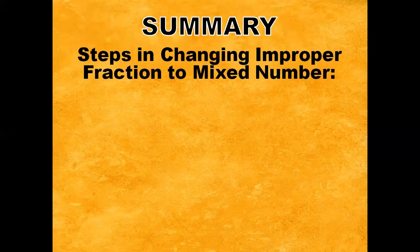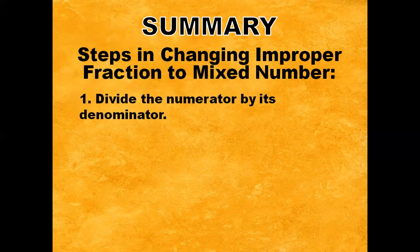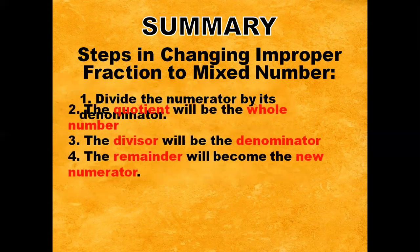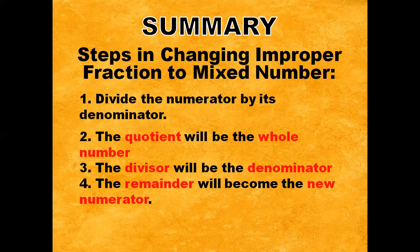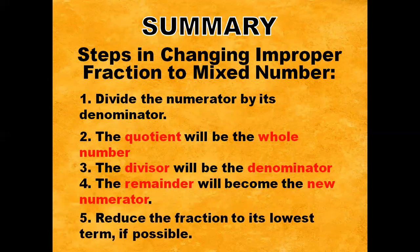Always remember the steps in changing improper fraction to mixed number. Step 1: Divide the numerator by its denominator. Step 2: The quotient will be the whole number, the divisor will be the denominator, and the remainder will become the new numerator. And last, reduce the fraction to its lowest term if possible.